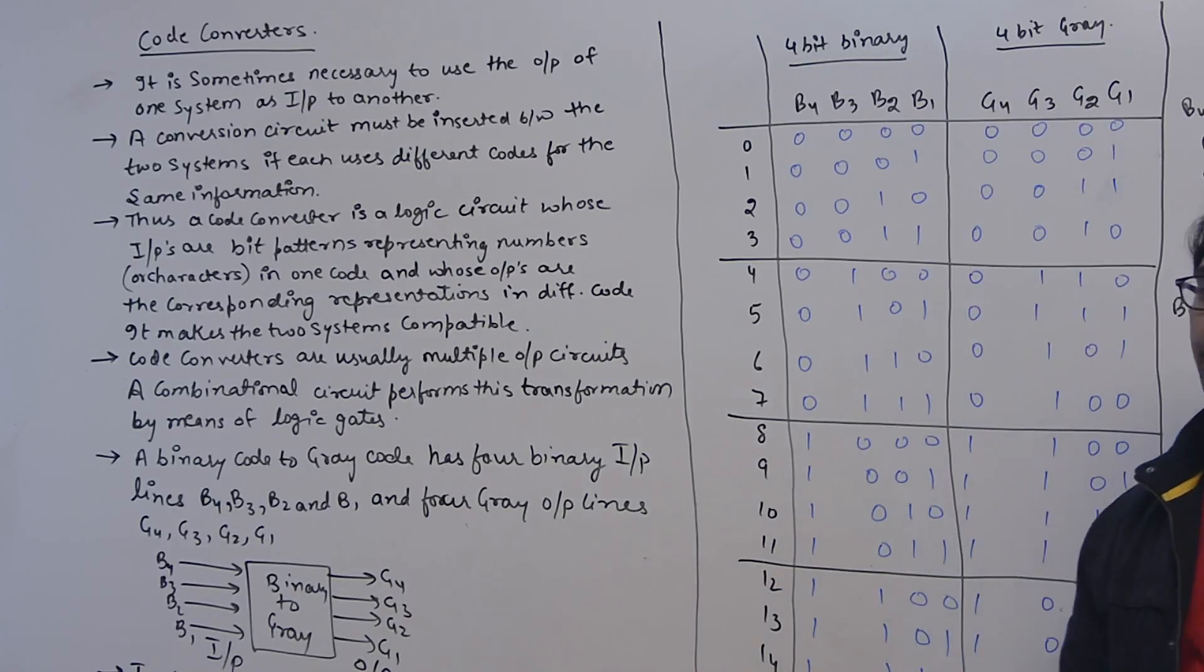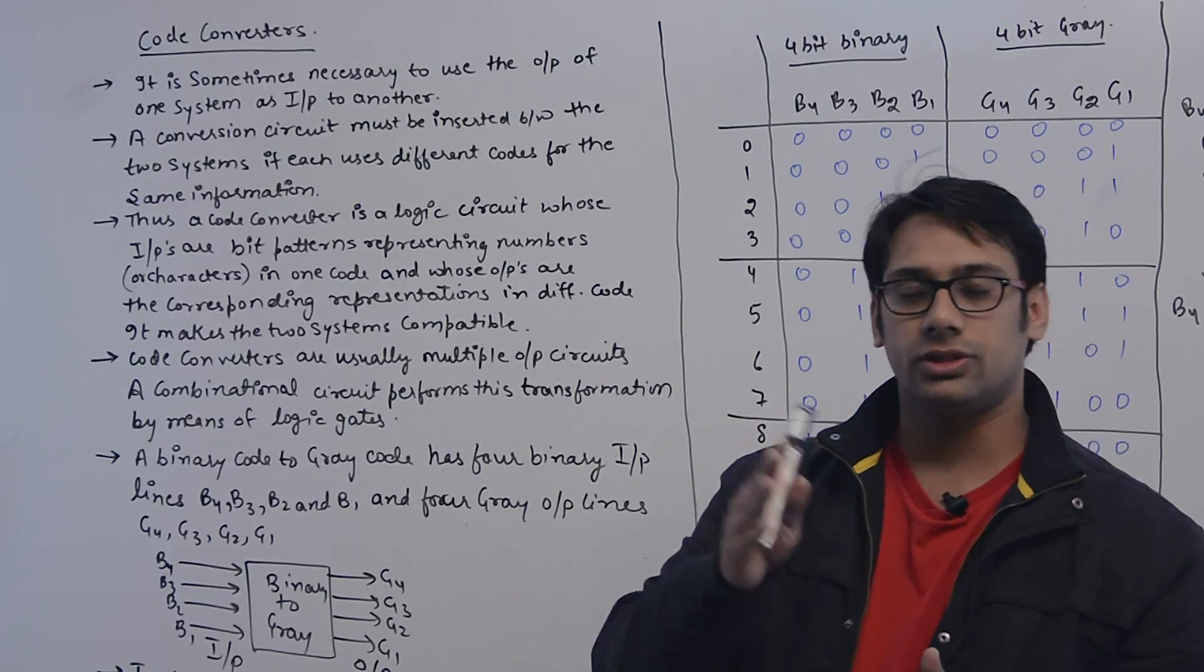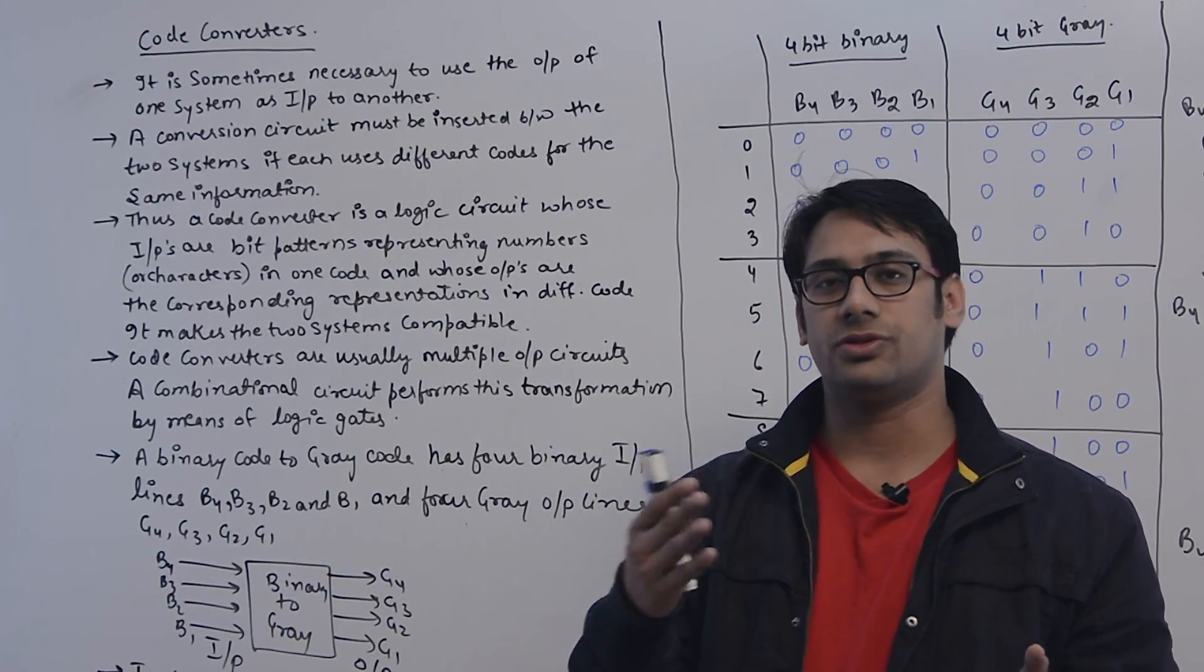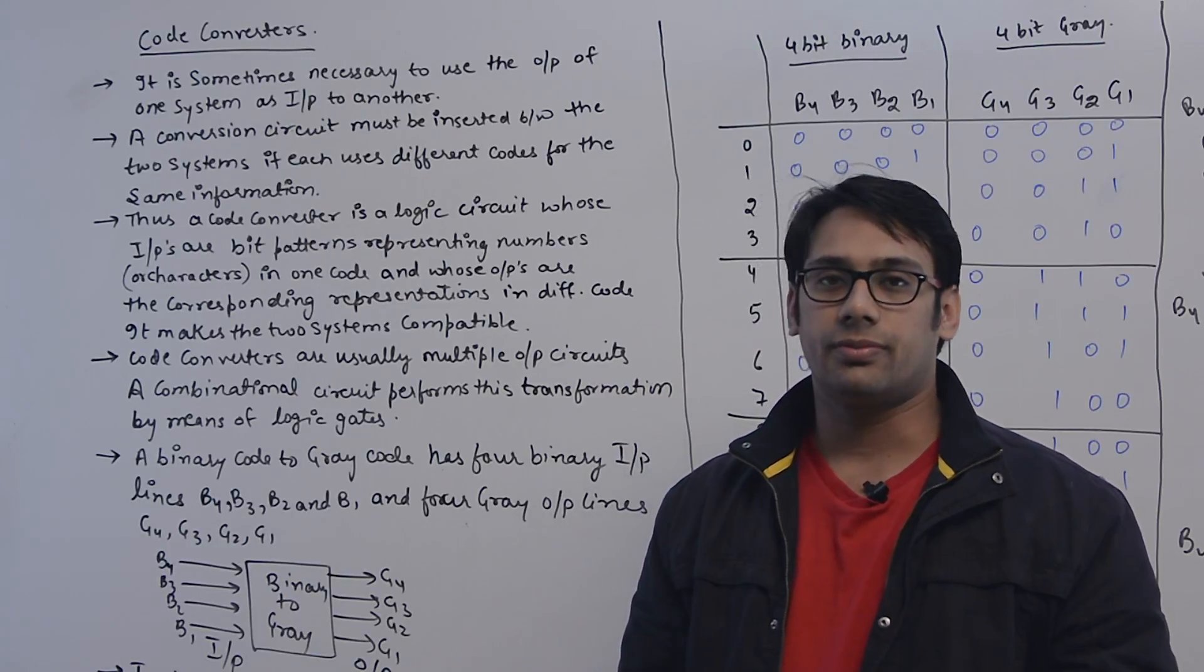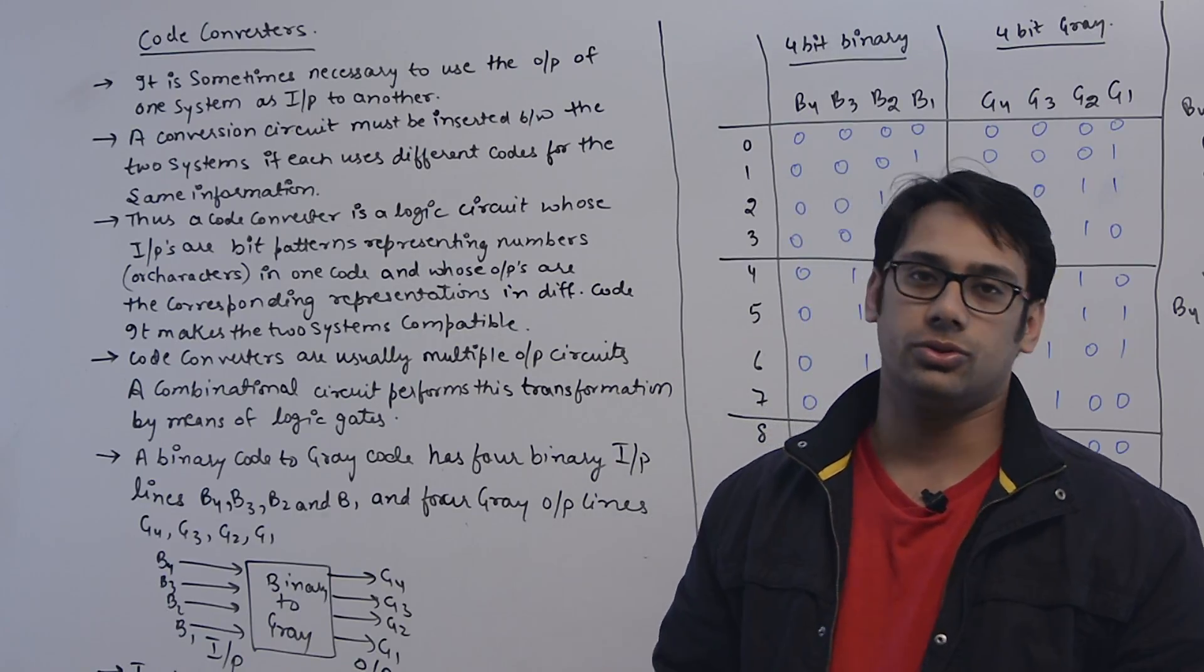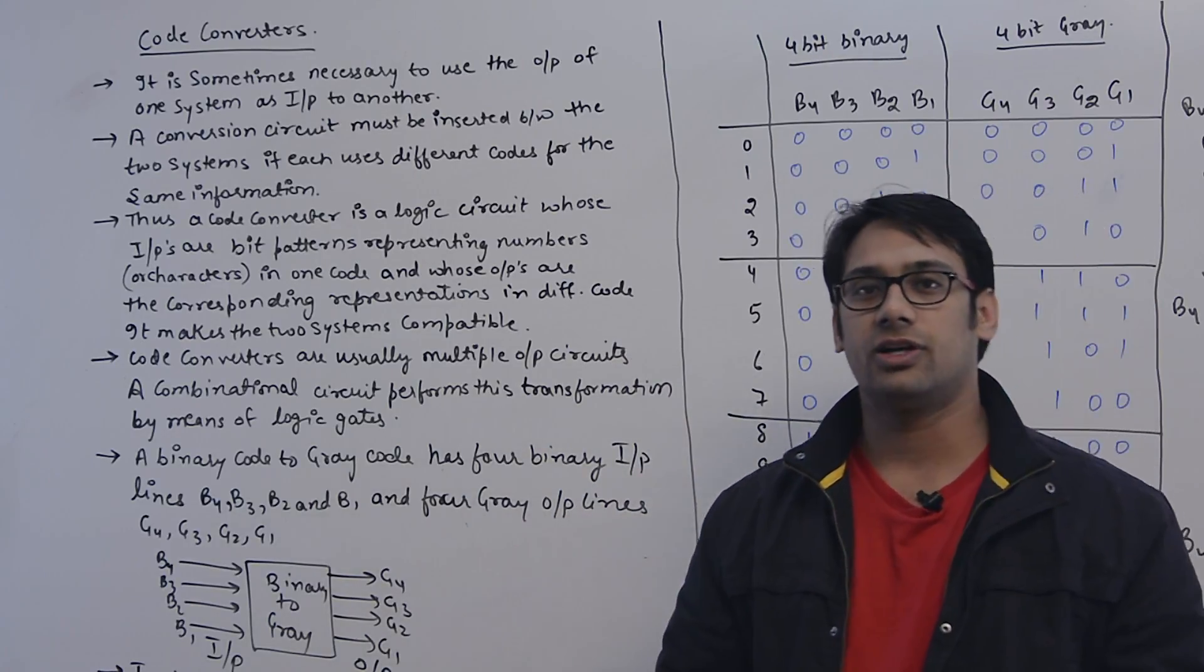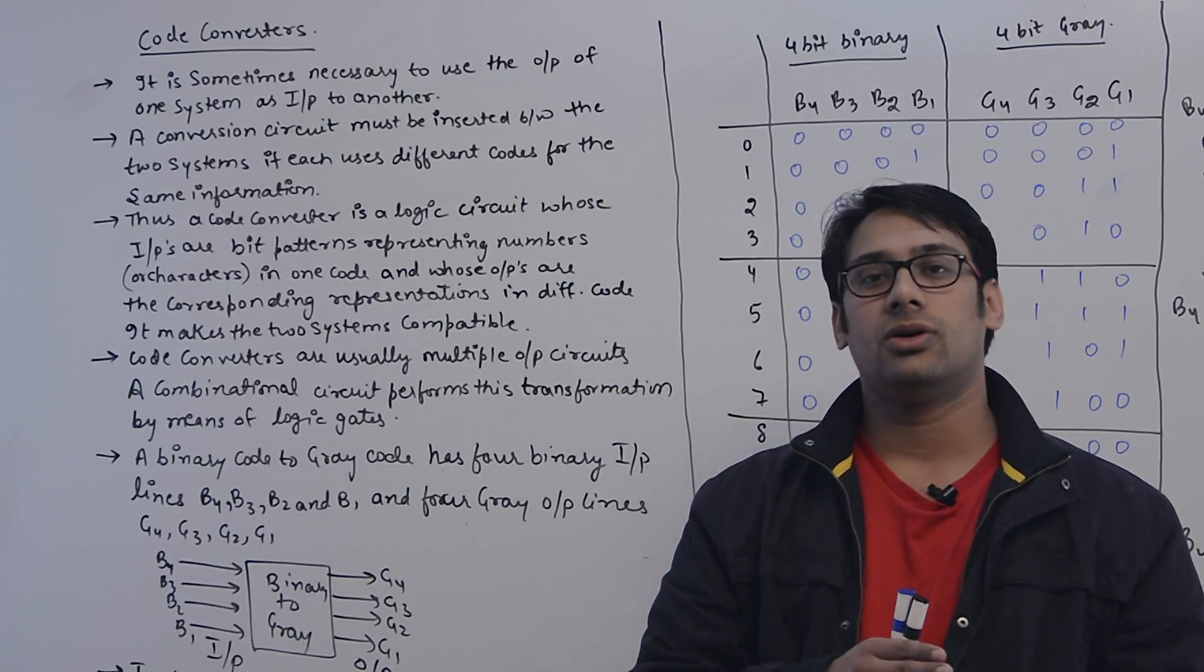Let us look at what is a code converter. If you have one kind of code and you want to convert that particular code to another code, then that is called code conversion. For example, if you have a gray code or a BCD code, then you want to convert that gray code to BCD code or BCD code to gray code.